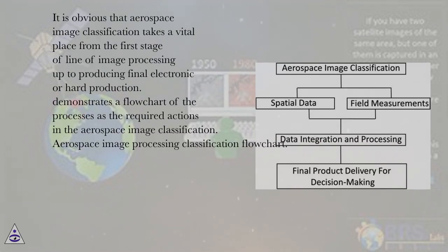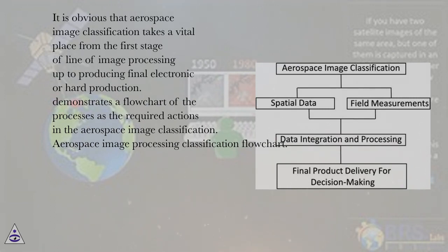It is obvious that aerospace image classification takes a vital place from the first stage of the image processing pipeline up to producing final electronic or hard production. This demonstrates a flowchart of the processes and the required actions in aerospace image classification.